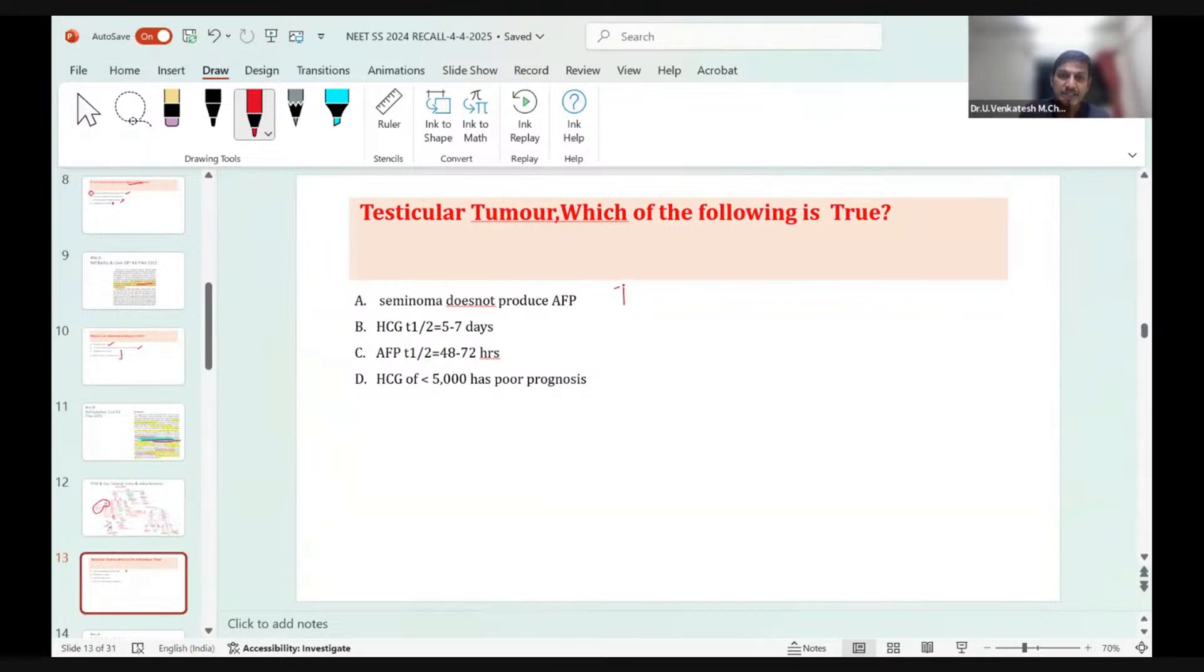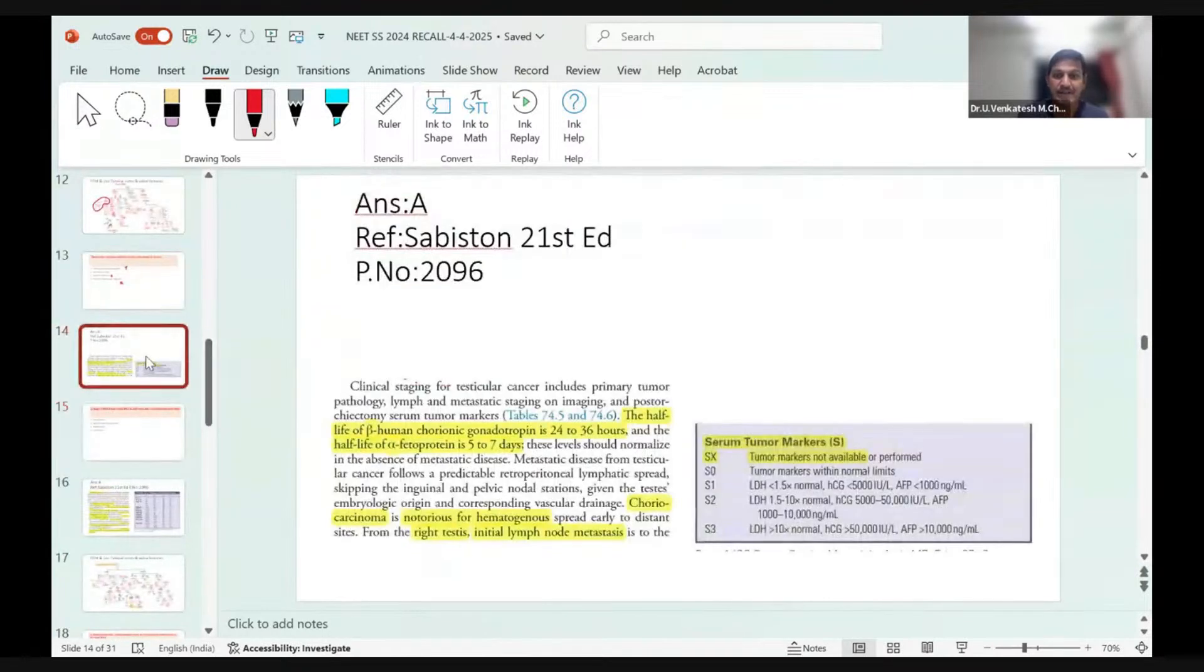Another question on testicular tumor: which is a true statement? Seminoma does not produce AFP - that's true. HCG half-life is 5-7 days - no, it's 24-48 hours. AFP half-life is 40 days - false, AFP has a half-life of 5-7 days. HCG less than 5000 comes under good prognosis - this is true. It comes under S1 tumor with better prognosis compared to S3 tumors. The cutoff for HCG is less than 5000, 5000-50,000, and more than 50,000.